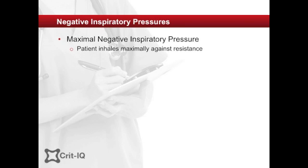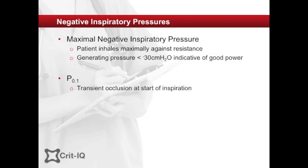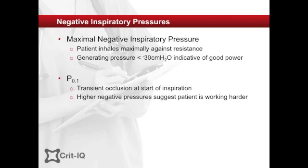The maximal negative pressure generated by the patient may be a marker of respiratory strength. Generating a negative inspiratory pressure less than minus 30 cm of water has been associated with successful extubation, though application in practice has been disappointing. Alternatively, the effort required from the patient to generate flow may be reflected in the negative pressure generated by a very brief occlusion of the circuit at the start of inspiration, known as P0.1. A negative pressure of 2 cm of water or less during a 0.1 second inspiratory occlusion is regarded as normal, while patients who have to generate pressures less than negative 4 to 6 cm of water are more likely to fail extubation.